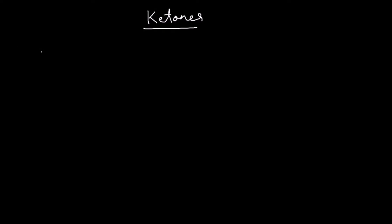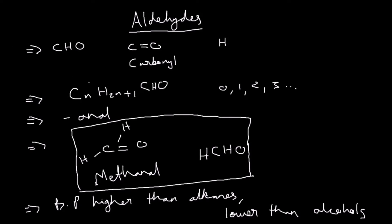Quite like aldehydes, ketones also contain the carbonyl group, which is C double bond O. Aldehydes always contain this at the end of the chain — you have this carbon at the end of the chain with C double bond O and then an H as well.